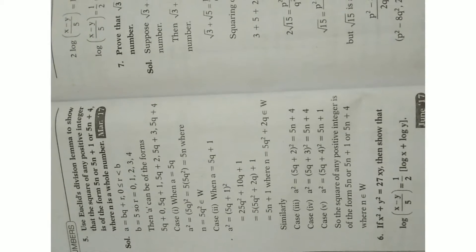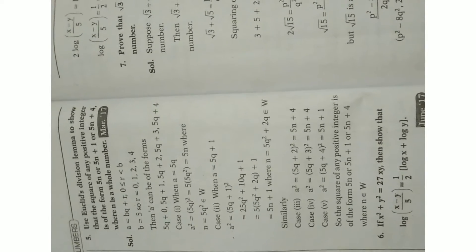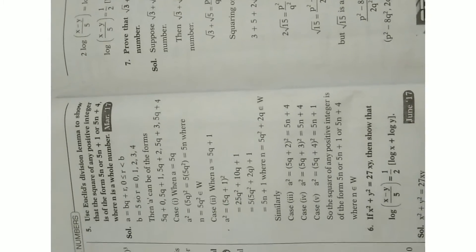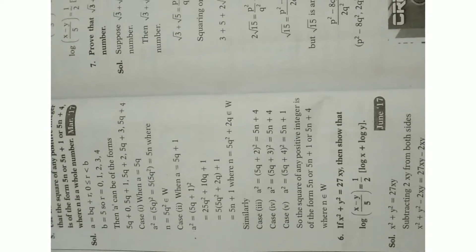Question number four: if x² + y² = 27x·y, then show that log((x − y)/5) = (1/2)(log x + log y). This is also a most important question.